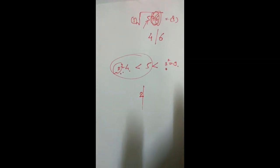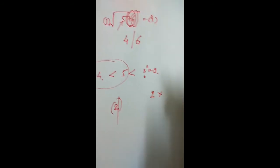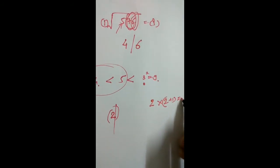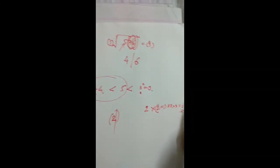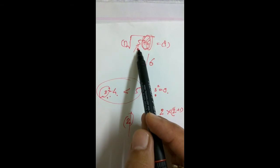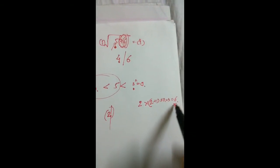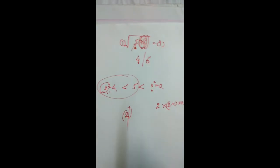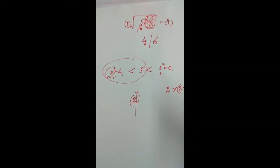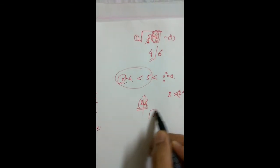Now we have to find the last digit. Take the first digit 2 and multiply: 2 × (2+1) = 2 × 3 = 6. Now check: is 6 greater than 5 or less than 5? It is greater than 5. Since 6 is greater than 5, we take the smaller option from our two candidates 4 and 6 — so we take 4. Therefore the square root of 576 is 24.